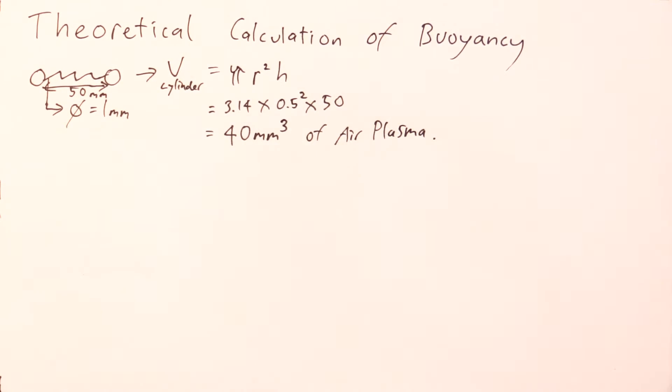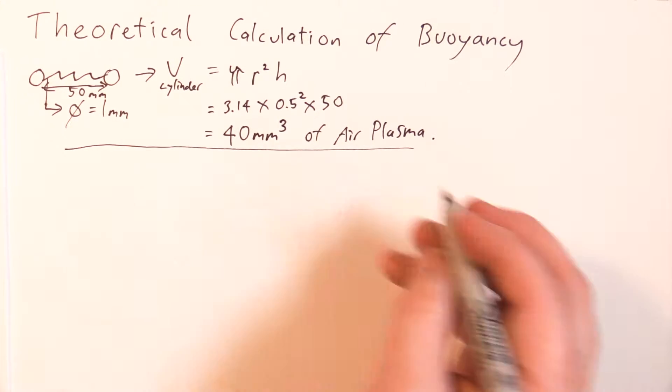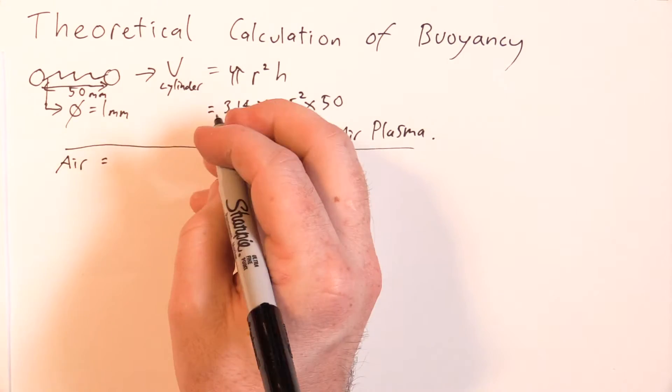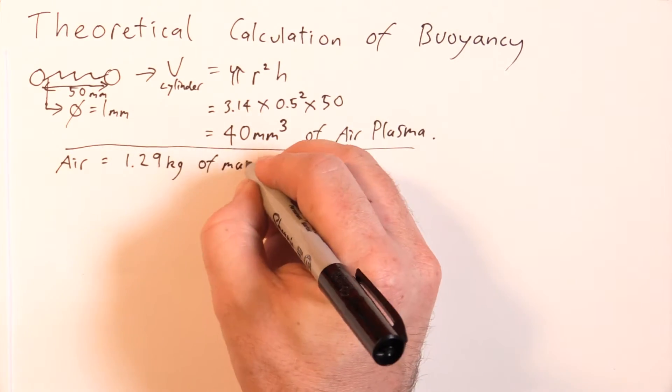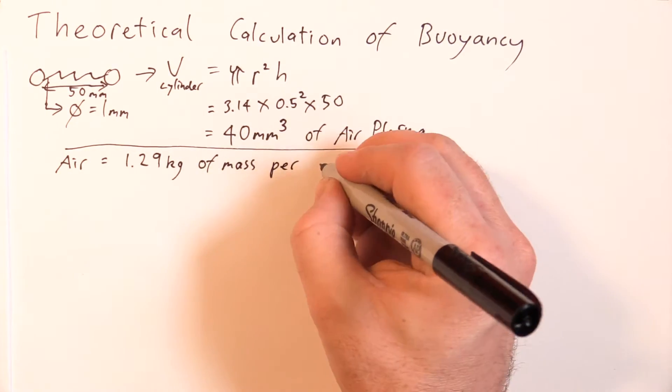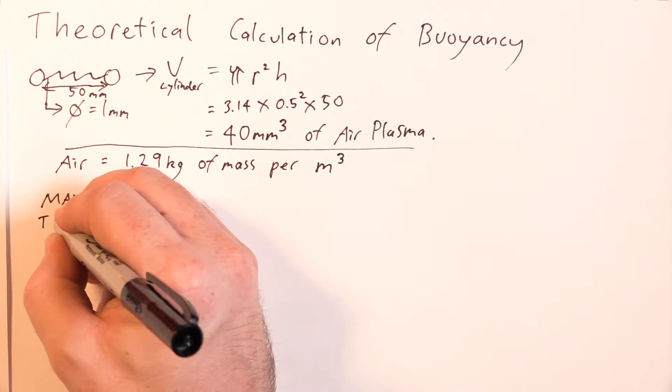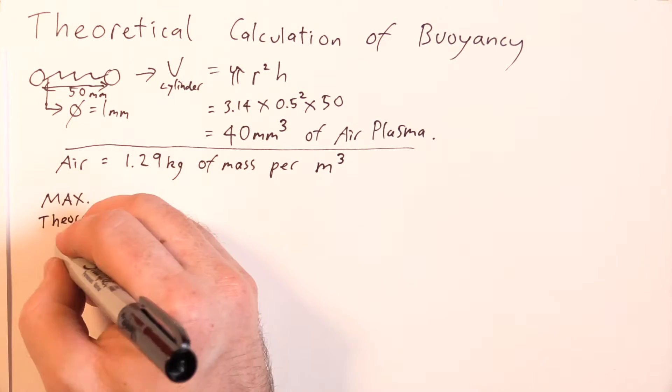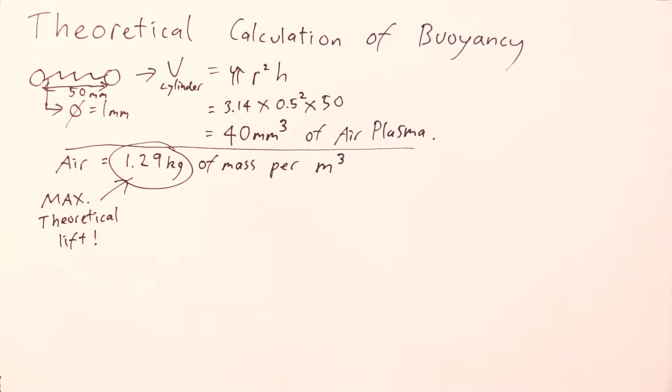What's happening with buoyancy is that you're displacing the mass of the existing air. When you have a cubic meter of air at sea level, you have around 1.29 kilograms of air mass. If you were to have a perfect vacuum and take that cubic meter of air mass away, you would then have 1.29 kilograms of lifting power. Therefore, 1.29 kilograms is the theoretical maximum lifting power for one cubic meter.